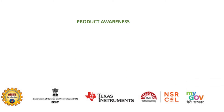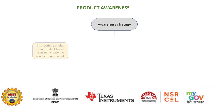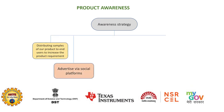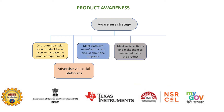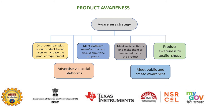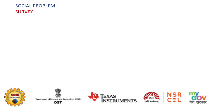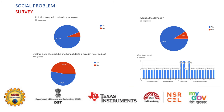For product awareness, advertising is done through social platforms. We also meet social activists and make them ambassadors for the product, as well as reach out to the public and shop owners. A survey was conducted by our team regarding social problems.